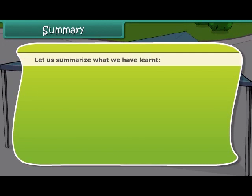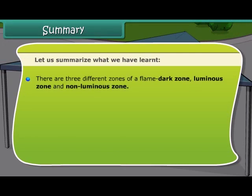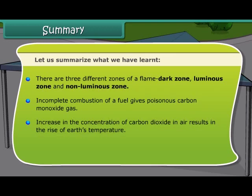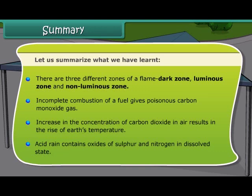Let us summarize what we have learned. There are three different zones of a flame: dark zone, luminous zone, and non-luminous zone. Incomplete combustion of a fuel gives poisonous carbon monoxide gas. Increase in the concentration of carbon dioxide in air results in the rise of Earth's temperature. Acid rain contains oxides of sulfur and nitrogen in dissolved state.